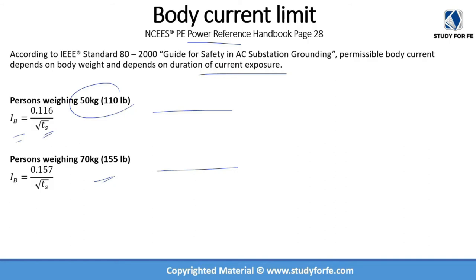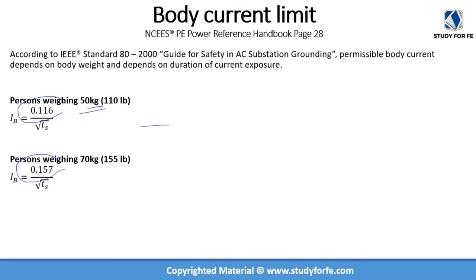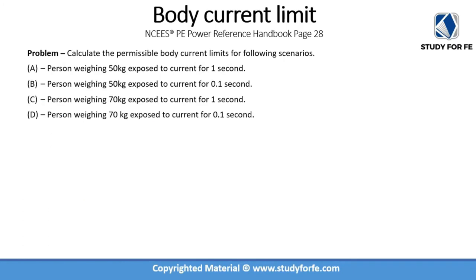The key variables in the permissible body current equations are weight and current exposure duration. For a 50 kg person the numerator is 0.116, while for a 70 kg person the numerator is higher, reflecting greater tolerable current for greater body weight. In the following practice problem, we are given four different scenarios: a 50 kg person exposed for 1 second, the same person exposed for 0.1 second, a 70 kg person exposed for 1 second, and a 70 kg person exposed for 0.1 second.